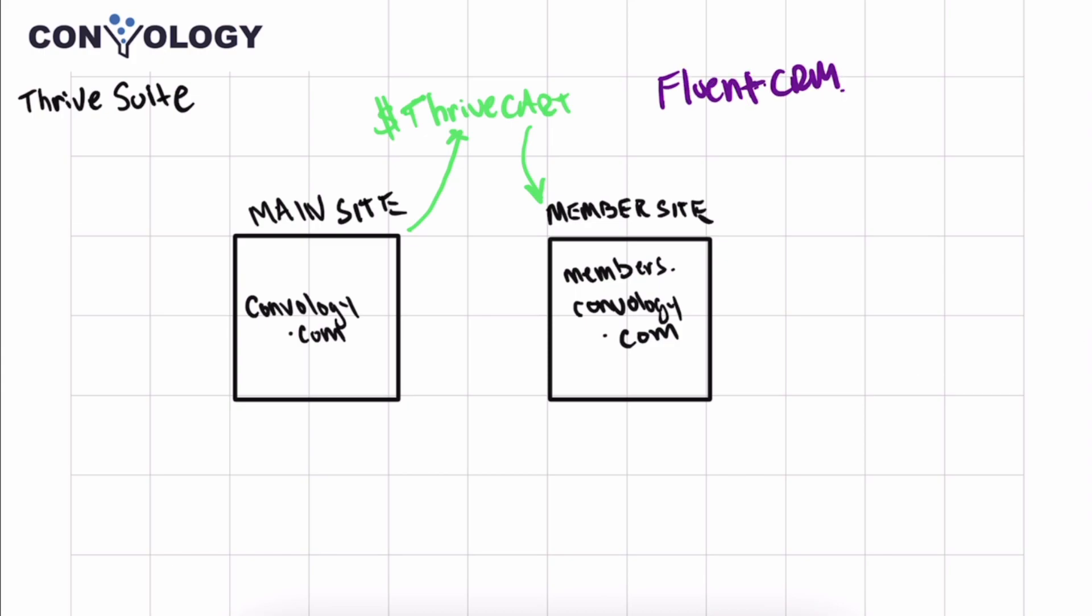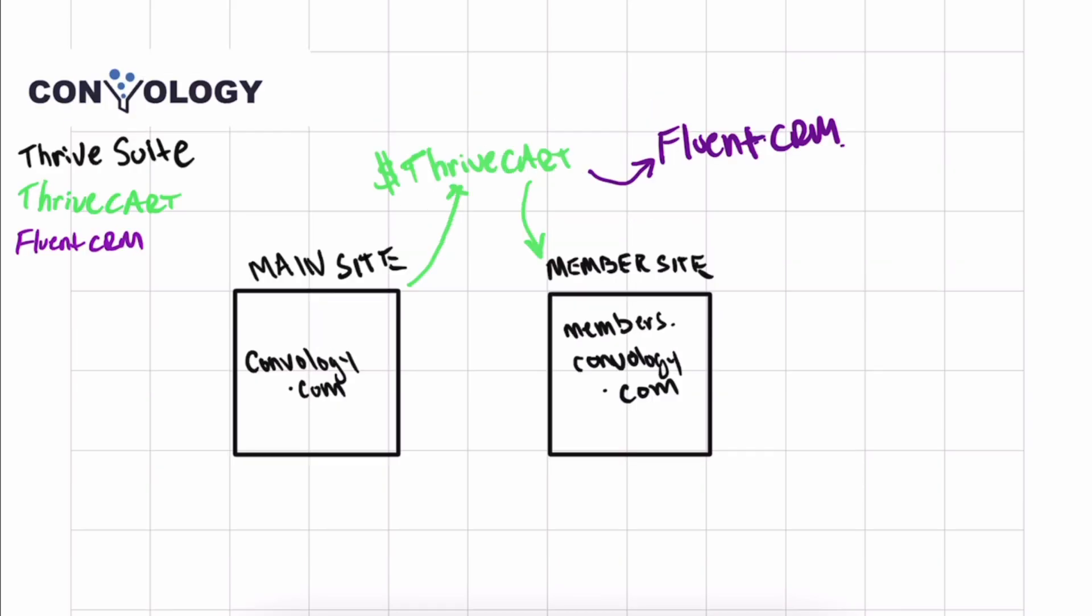ThriveCart's also doing something else when a sale is completed. ThriveCart is also notifying my email marketing automation tool, which is FluentCRM. FluentCRM built a tool called Fluent Connect, which basically APIs into ThriveCart. It's able to say when a sale happens, do something in FluentCRM. So I have a lot of tagging going on. When a user purchases in ThriveCart, they get tagged in FluentCRM.